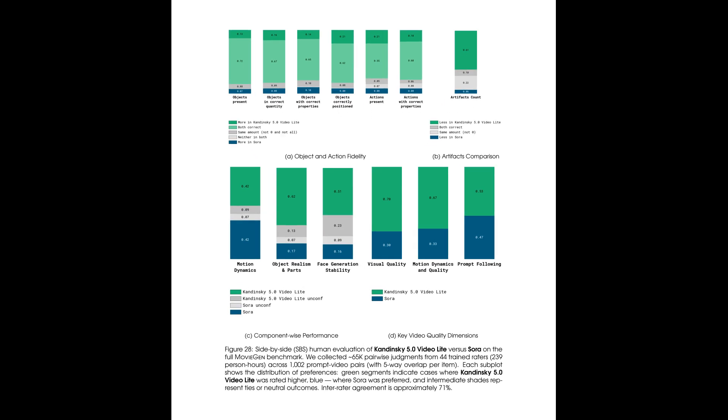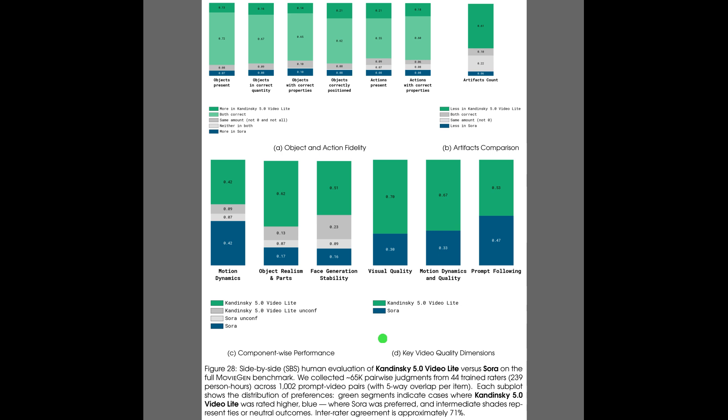Figure 28 shows that human raters generally prefer Kandinsky 5.0 Video Light over Sora on most video quality aspects. The stacked bars indicate higher grain regions, meaning better motion dynamics, more realistic objects and faces, and overall higher visual quality. The artifacts bar suggests Kandinsky usually produces fewer glitches. Only the prompt following bar leans toward Sora, which tracks textual instructions slightly more faithfully.